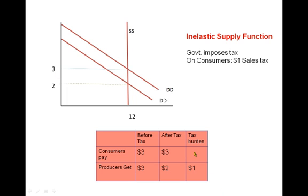So for consumers, there's no change in prices before and after. But for producers, there's a $1 difference. And this $1 is the tax burden. The complete tax, which is $1, comes out of the producer's pocket.